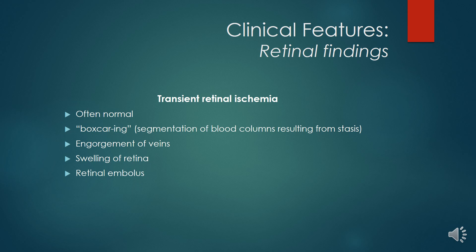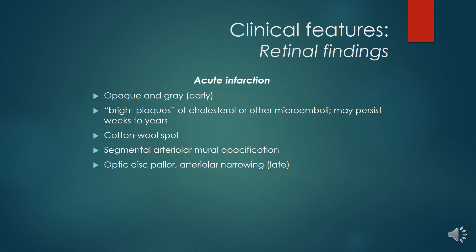In transient retinal ischemia, findings may be normal or show vascular changes including engorgement of veins, swelling of the retina, and retinal emboli. Clinical features and retinal findings of acute infarction include opaque and grey retina as an early sign. Bright flakes of cholesterol or other microemboli may persist for weeks to years. Cotton wool spots, segmental arteriolar mural opacification, optic disc pallor, and arteriolar narrowing are late signs.